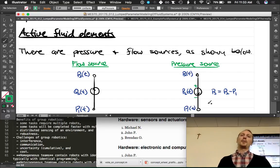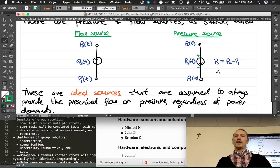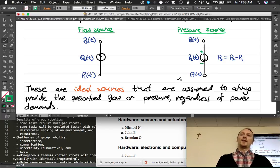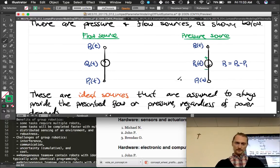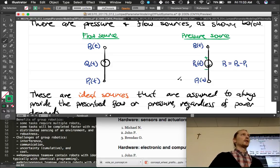Finally, we have active fluid elements. We just did three passive types. And these are going to be the active types. So, they're pressure sources and flow sources. We draw them like we've drawn the through variable sources and cross variable sources before. These are ideal sources that are assumed to always provide the prescribed flow or pressure, regardless of power demands. Now, what types of devices might be flow sources and pressure sources? What would those model? I mean, we're modeling stuff that happens. So, like, what is it out there that happens? Like a pump? Really good example. And it depends on the type of pump, whether it's more like a flow source or more like a pressure source. So, there are like 50 kinds of pumps. And it just depends on the type and how you're using it, oftentimes, too.